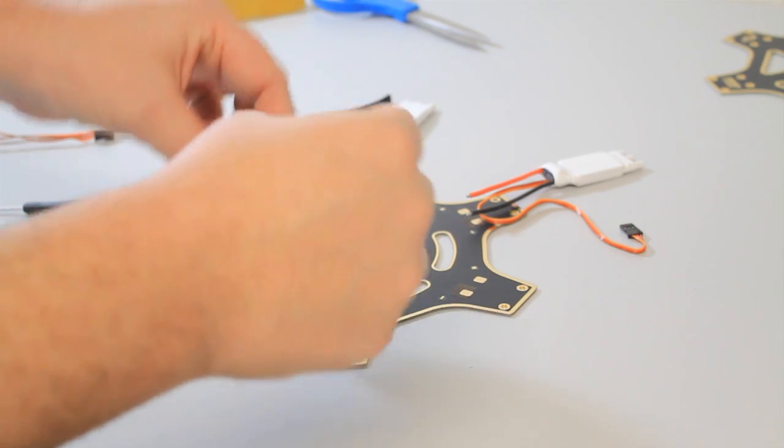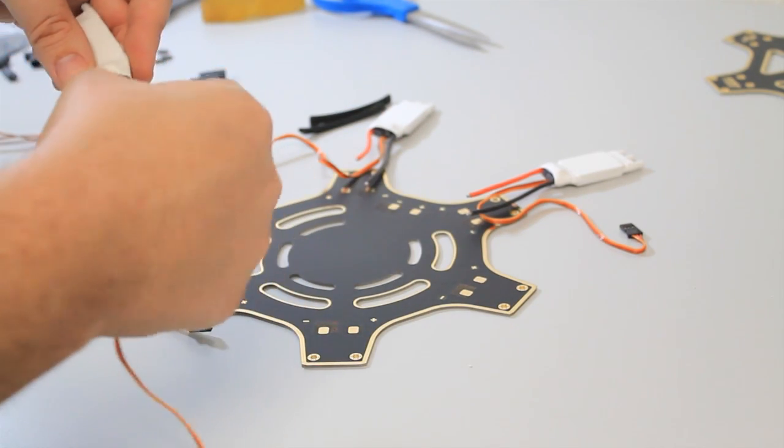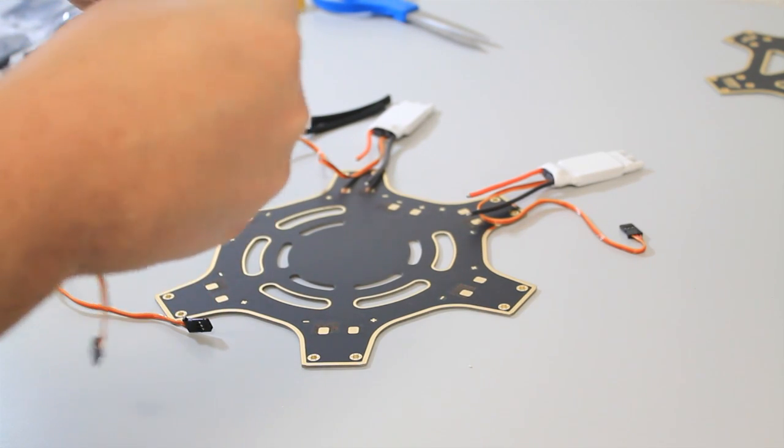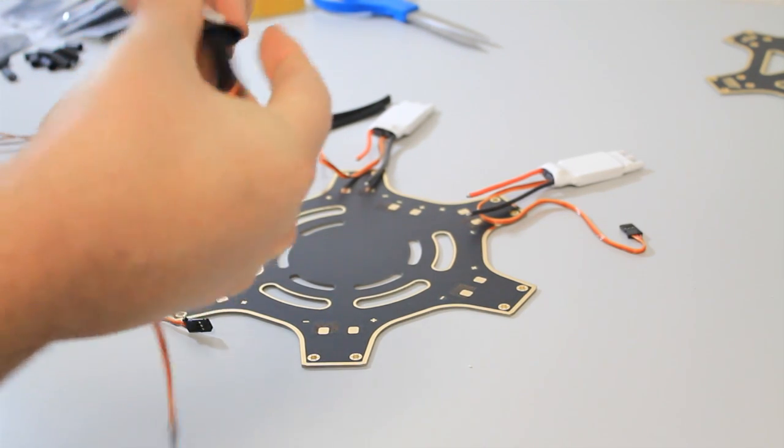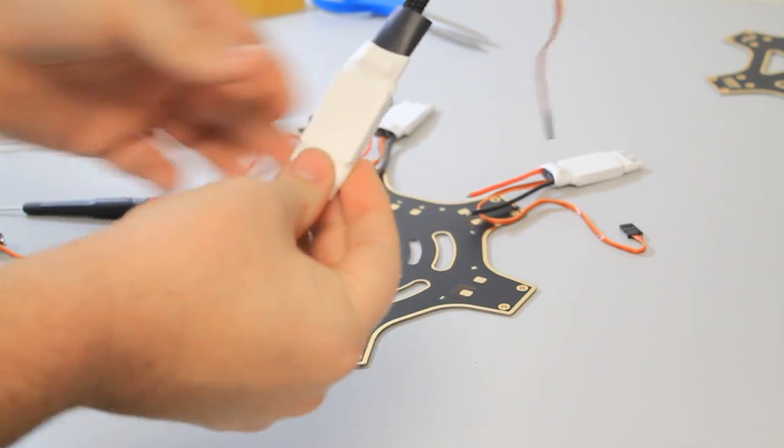Take heat shrink tubing. This is just the first end. Go ahead and feed that over. I like to work it down into the heat shrink that's already on the DJI ESC. Get there nice and snug. Then take your heat gun.